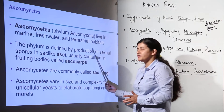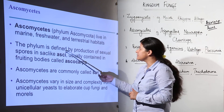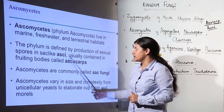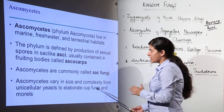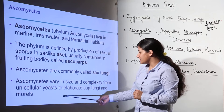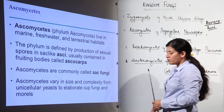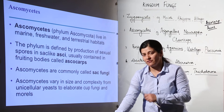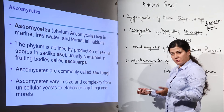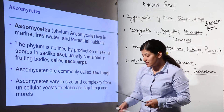Ascomycetes live in marine, freshwater, and terrestrial habitats, so they are ubiquitous. The phylum is defined by the production of sexual spores in sac-like asci, usually contained in fruiting bodies called asco cups. Ascomycetes are commonly called sac fungi because of this. They vary in size and complexity from unicellular yeast to elaborate cup fungi and morels. The most important yeast, highly significant for economic purposes and industry, is also part of Ascomycetes.